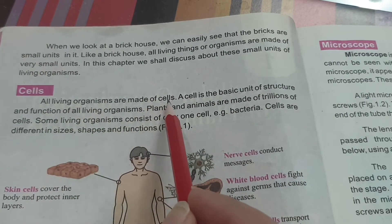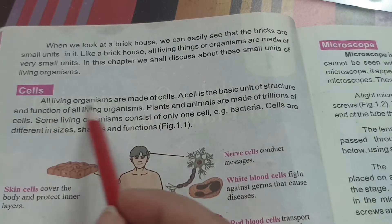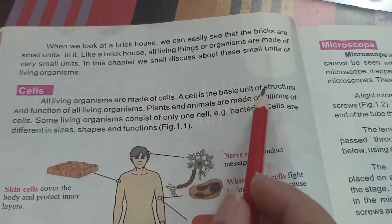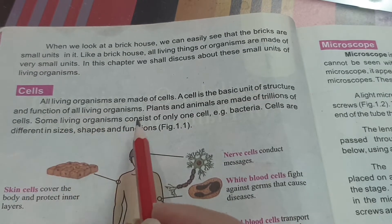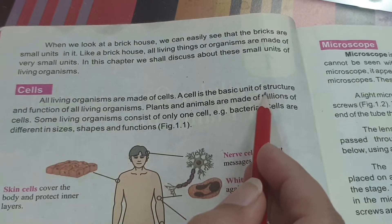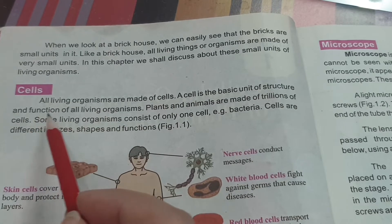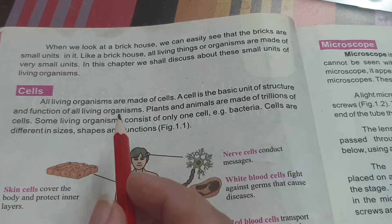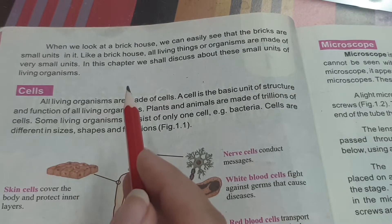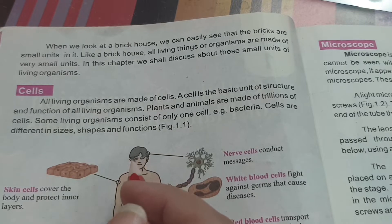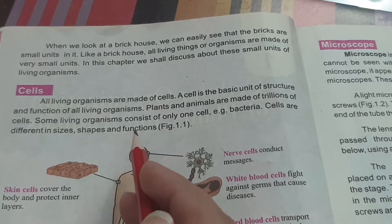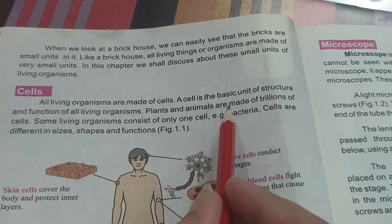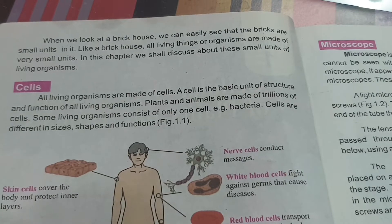All living organisms are made of cells. Whether they are plants, animals, or humans, they are made of cells. A cell is the basic unit of structure and function of all living organisms. It is not only a structural unit but also performs different functions. Due to the combined action of all these cell functions, we are able to run, walk, eat, and write.